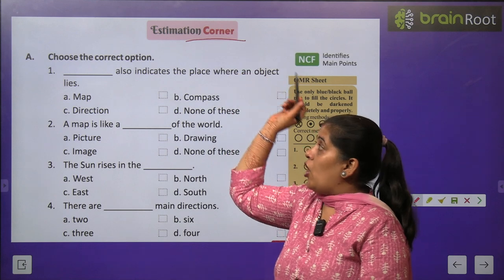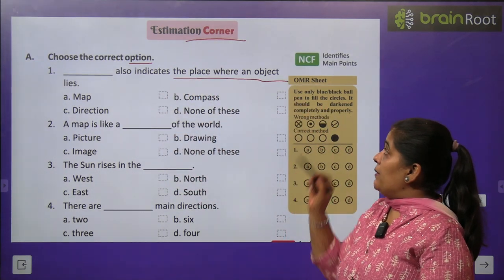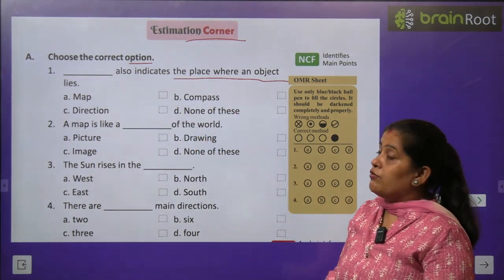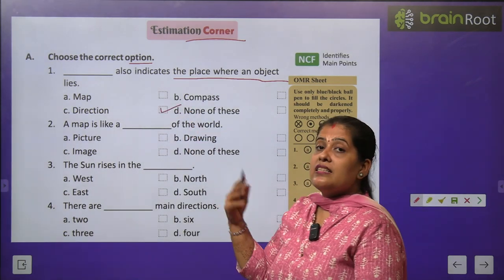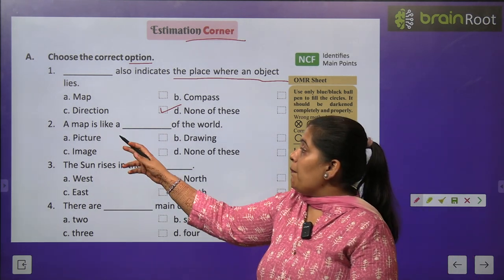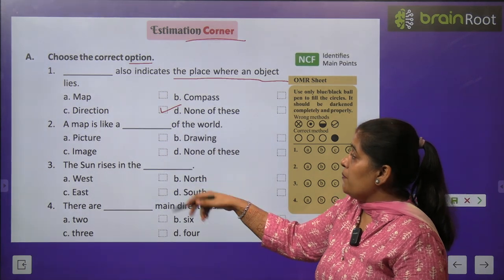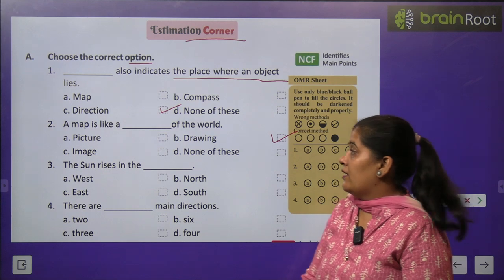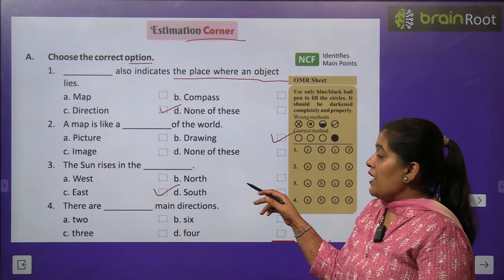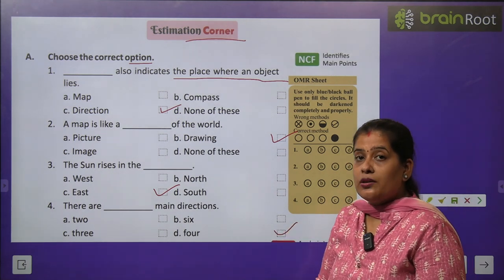Now time for the estimation corner. Exercise A — Choose the correct option. Direction also indicates the place where an object lies — map, compass, direction, or none of these? The answer is direction. A map is like a dash of the world — picture, drawing, image, or none of these? The answer is drawing. The sun rises in the east. There are four main directions — East, West, North and South.